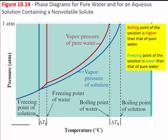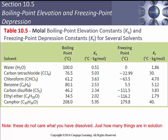Looking at the phase diagram: if there's a change in freezing point, the freezing point happens at a lower temperature — it shifts to the left. The vapor pressure line drops, so you take the whole curve and shift it down and to the left. Because this line has shifted down, the boiling temperature moves to the right — it now occurs at a higher temperature. So the boiling point goes up and the freezing point goes down.